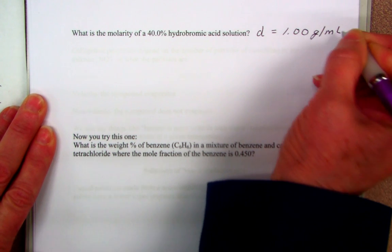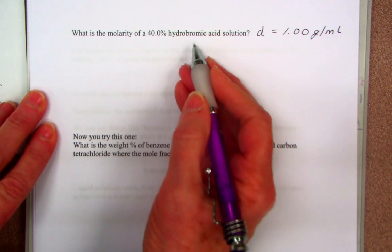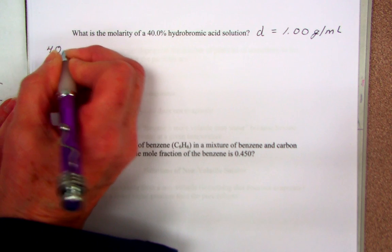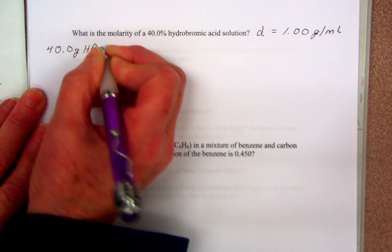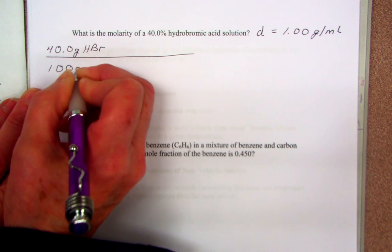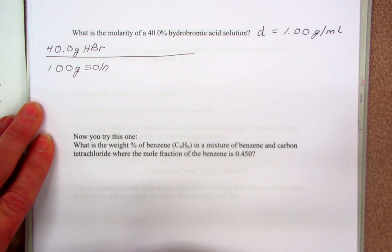We know that we have 40 percent hydrobromic acid. That means I have 40.0 grams of HBr for every 100 grams of solution, and that 100 grams is an exact number so we get as many sig figs as we want.